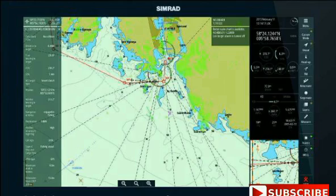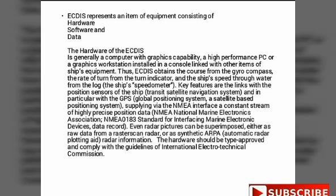ECDIS represents an item of equipment consisting of hardware, software and data. The hardware of the ECDIS is generally a computer with graphics capability, a high-performance PC or a graphics workstation installed in a console linked with other items of ship's equipment.